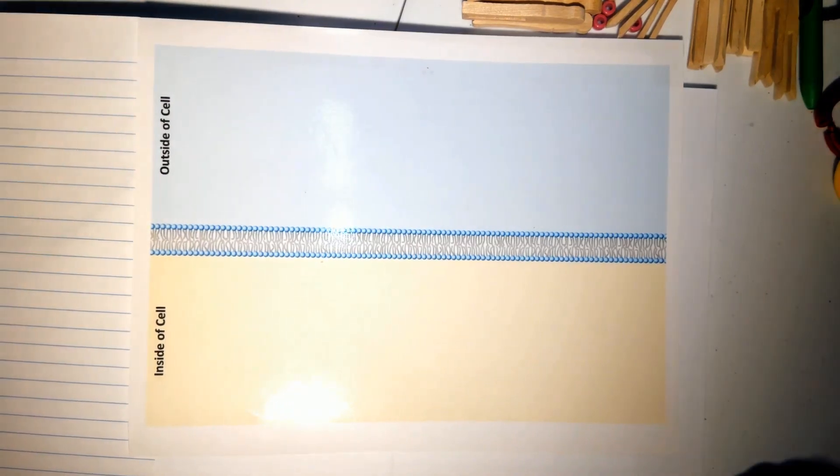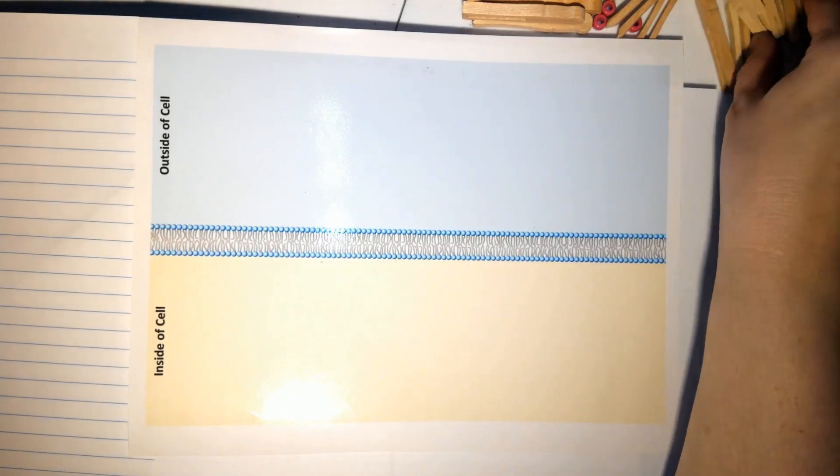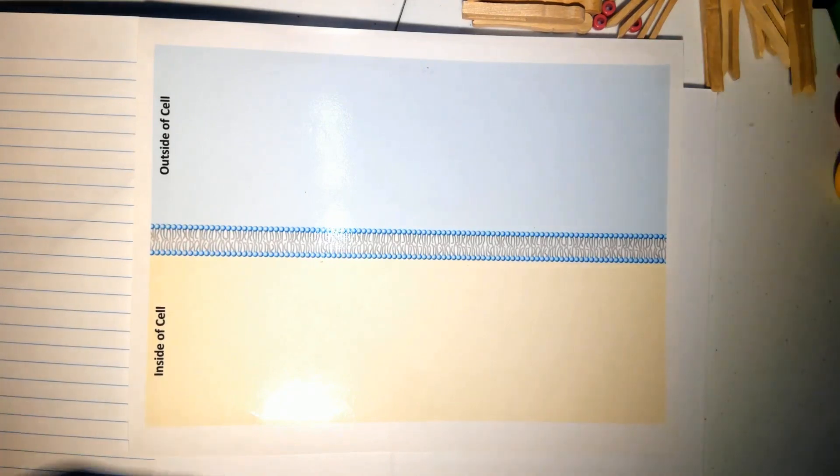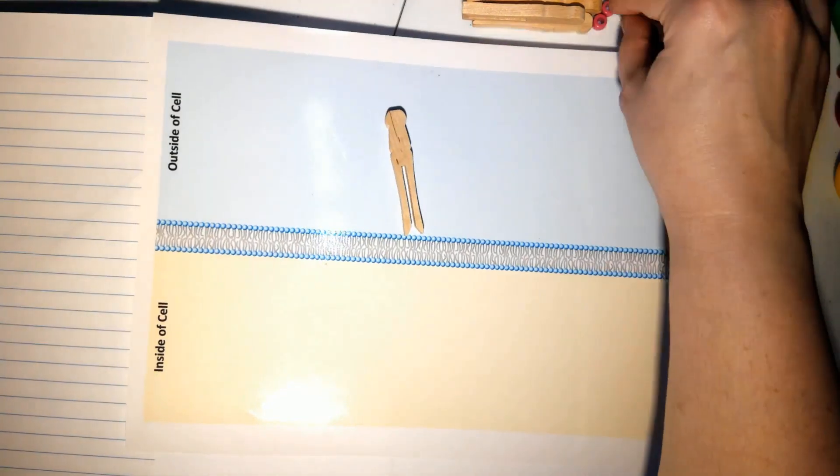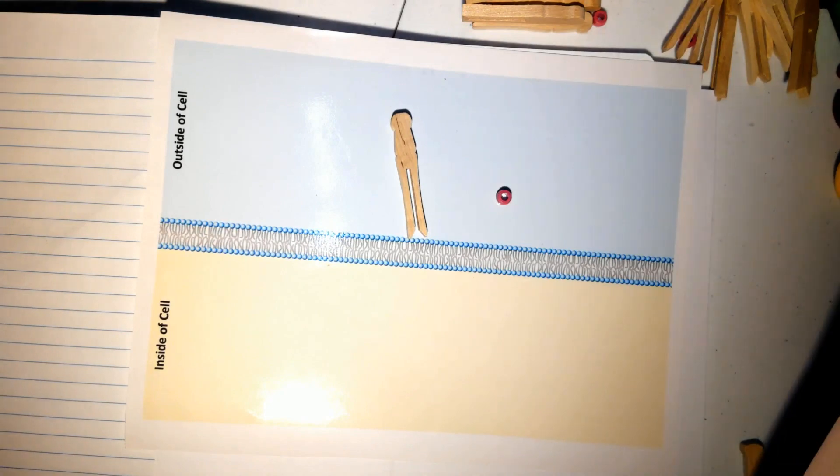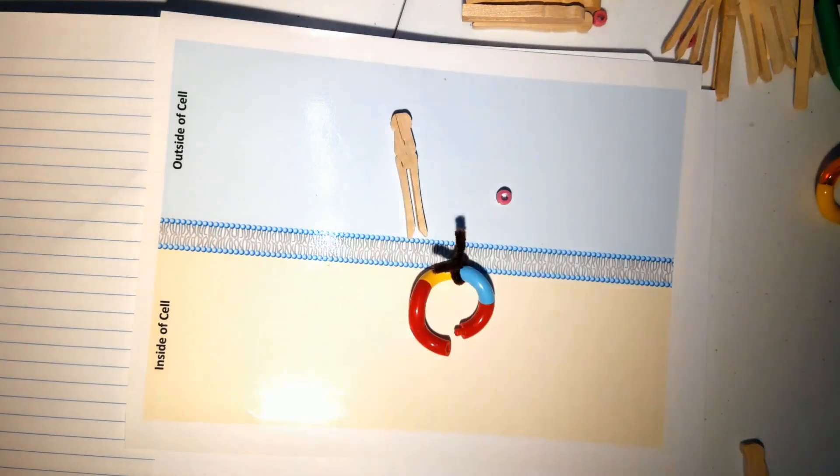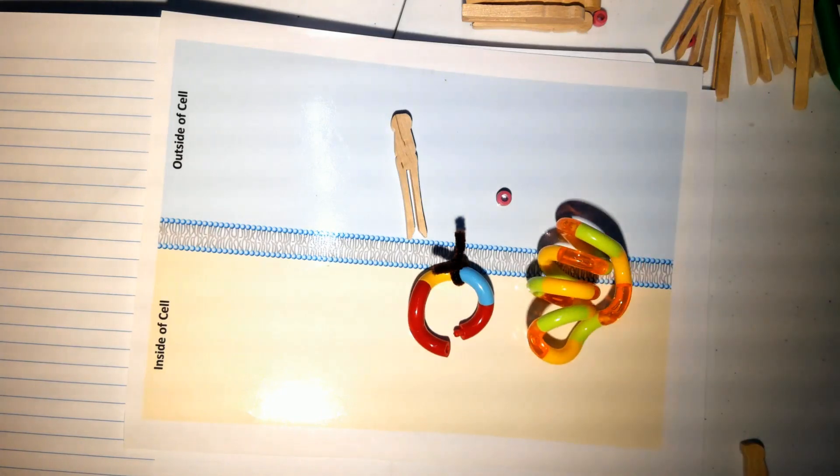So there's four components that you need to know in a cell membrane. And I'm going to represent those with these clothespins, tiny beads, pipe cleaners, and these funny looking plastic swirly things. This is called a tangle, so that's how I'm going to refer to it when we're building the model.